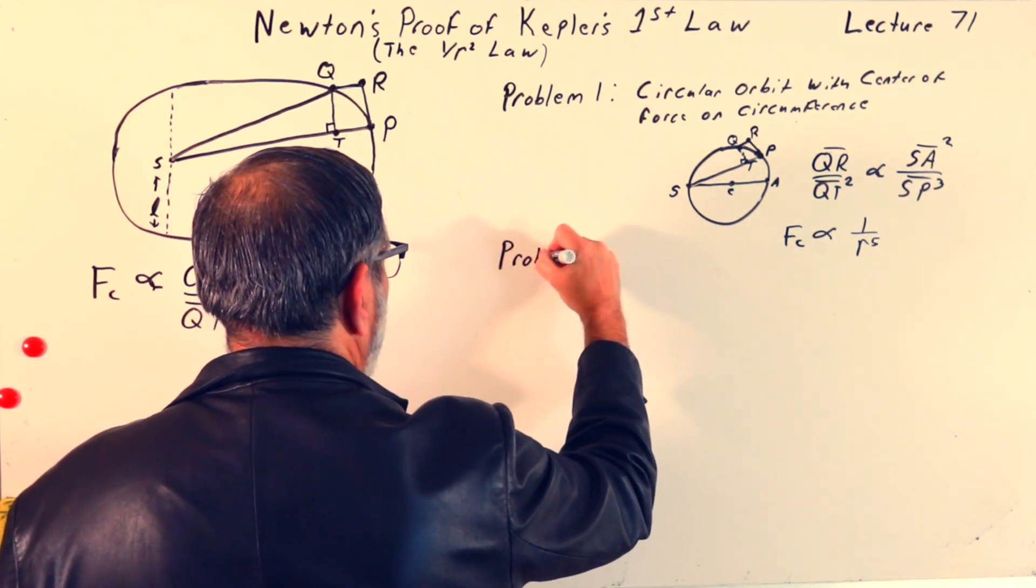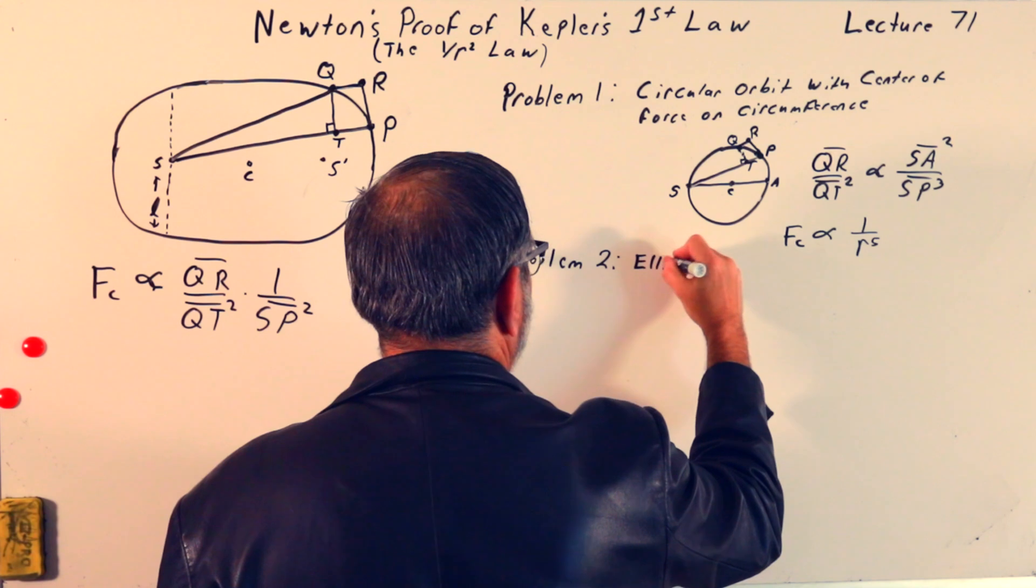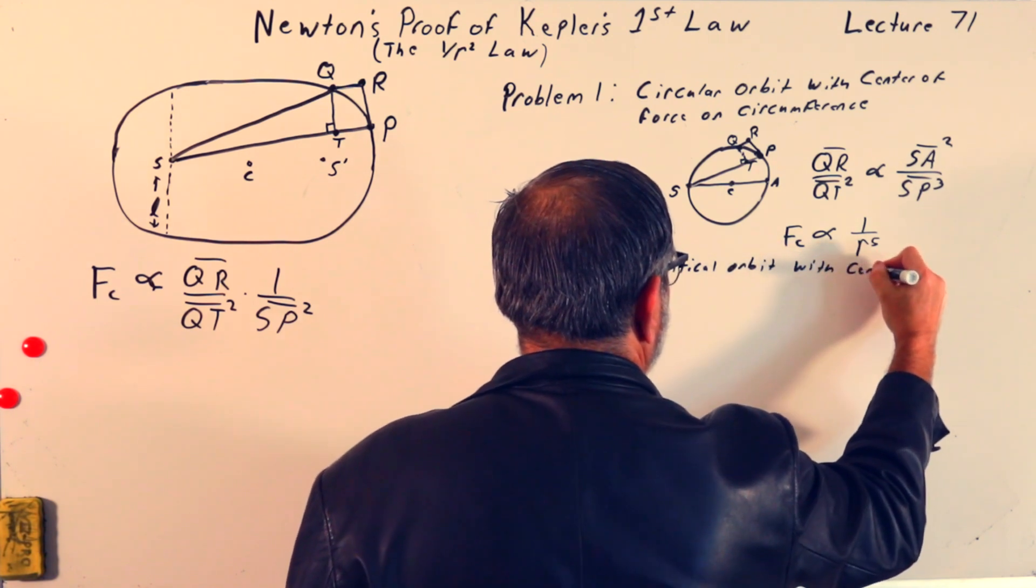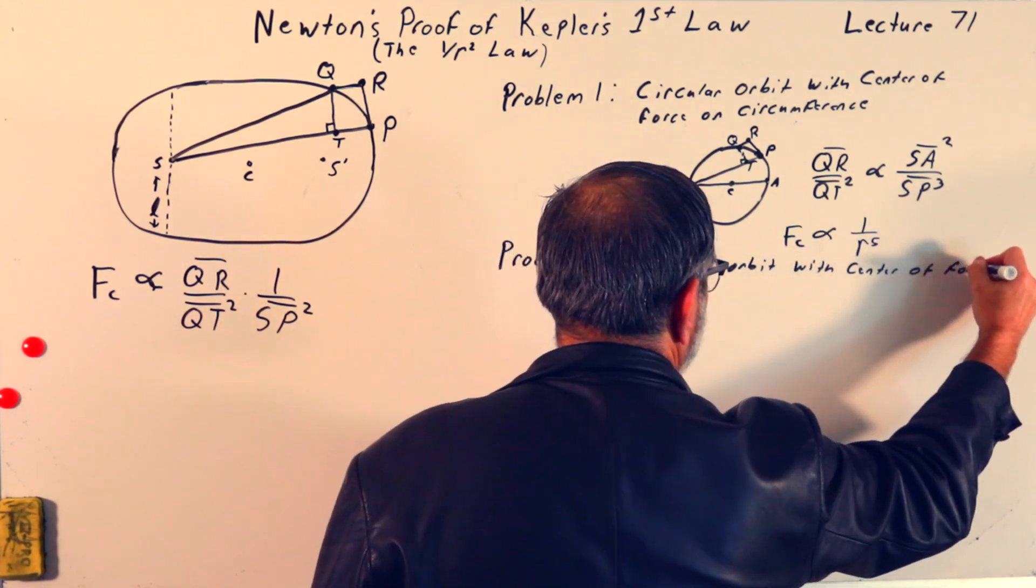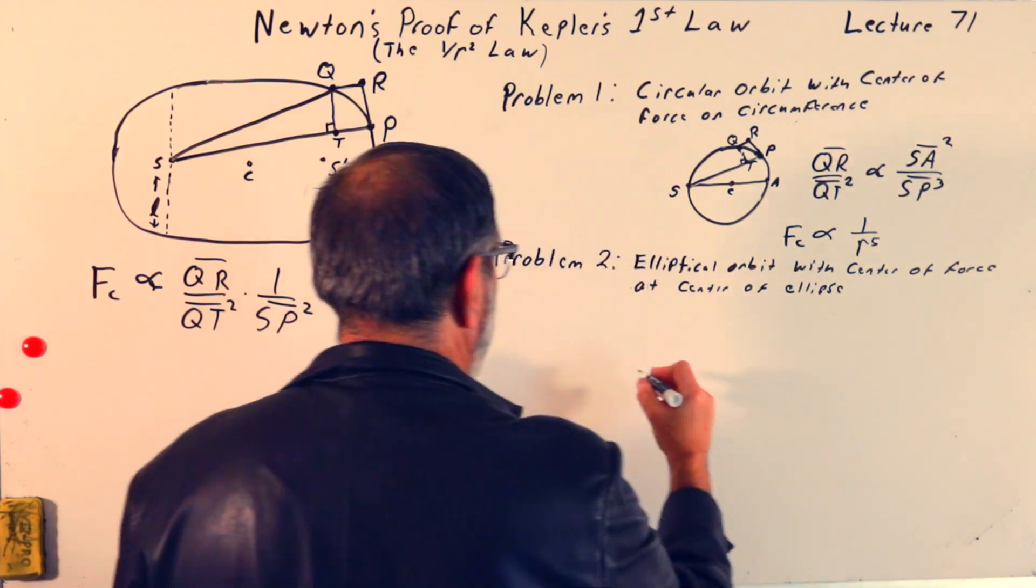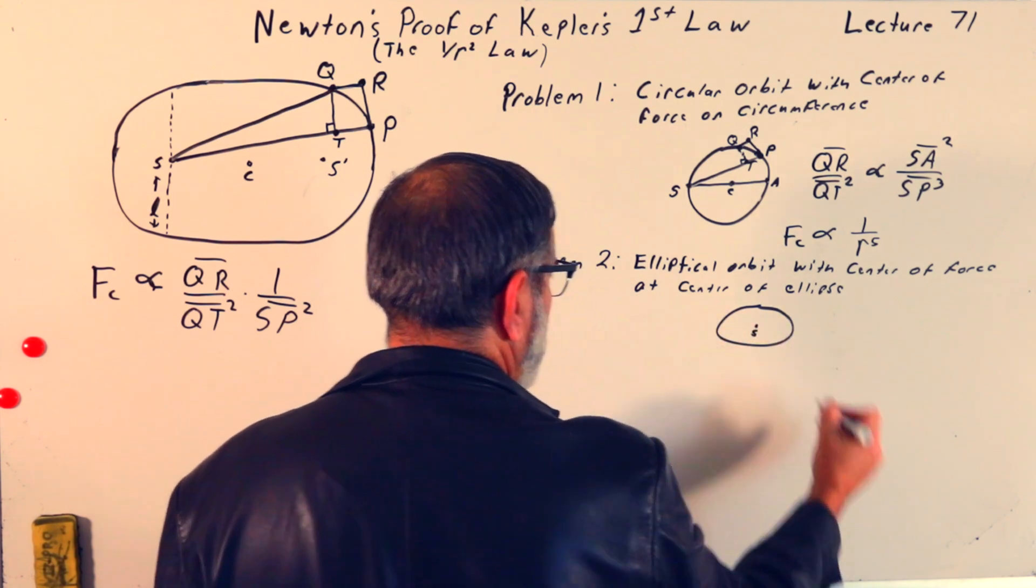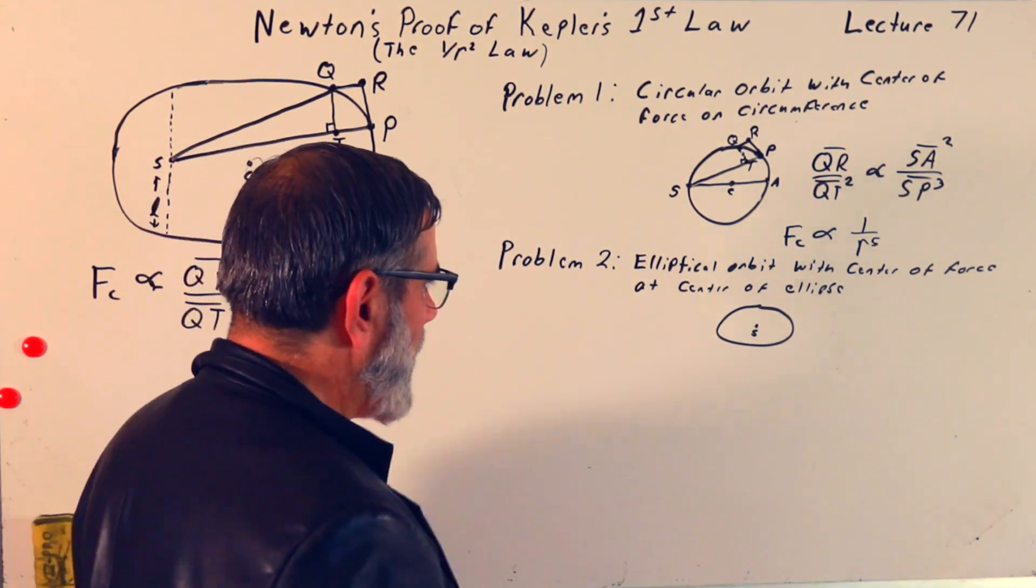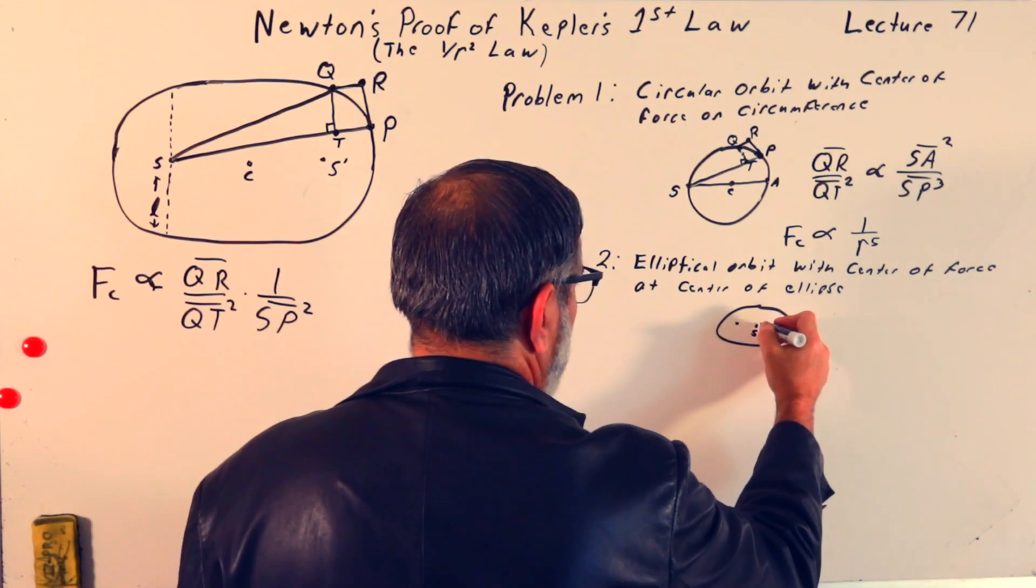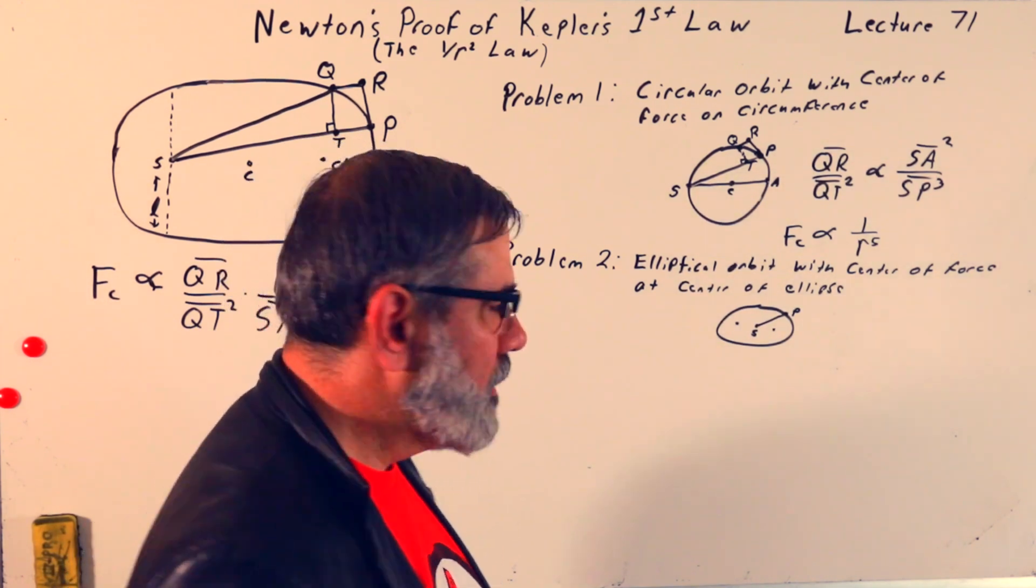Problem 2 that he solved is a little closer to what he wants in the end, and that is elliptical orbit with center of force at center of ellipse. So, we have a center of the ellipse here, and we'll put our sun, or our center of force, S, at the center of the ellipse. I'll still mark the foci as being these two points here. And I'm just going to put in the point P. I'm not going to draw in the deviation or any of that stuff.